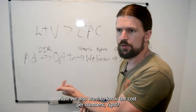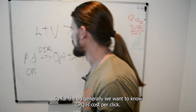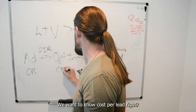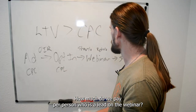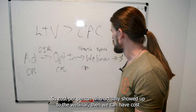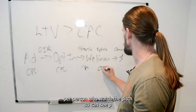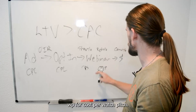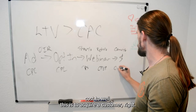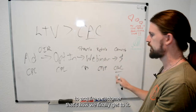We also want the cost-per numbers at each stage. For the ad, we track CPC — cost per click, meaning how much we pay per person who clicks. For the opt-in, we track cost per lead. On the webinar, we track cost per show — cost per person who actually showed up — and then cost per watch-pitch, or CPWP. Finally, cost per conversion is our cost to acquire a customer — that's the CAC number we've been building toward.